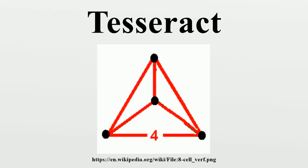The dual polytope of the tesseract is called the hexadecachoron, or 16-cell, with Schläfli symbol 3-3-4. The standard tesseract in Euclidean four-space is given as the convex hull of the points. A tesseract is bounded by eight hyperplanes. Each pair of non-parallel hyperplanes intersects to form 24 square faces in a tesseract. Three cubes and three squares intersect at each edge.